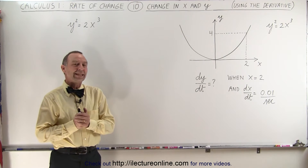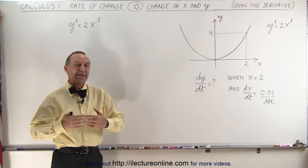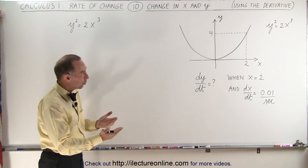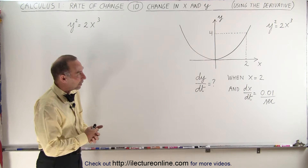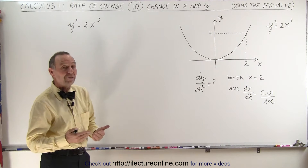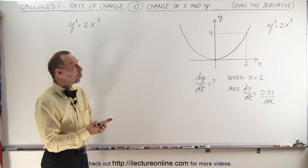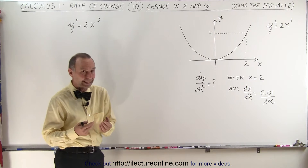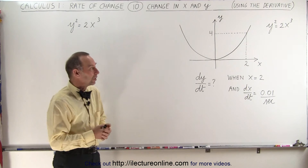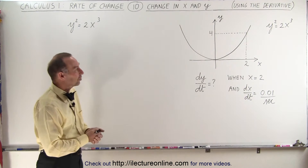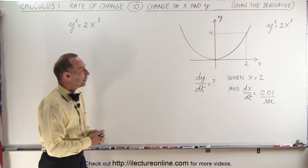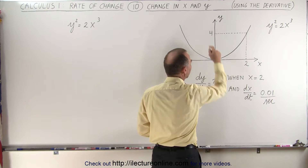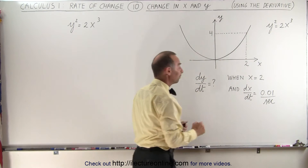Welcome to Electron Line. Here we have a simple graph — a relationship between x and y — and the graph is that y squared equals 2x cubed. So it's not quite like a typical parabola, but it kind of looks the same. Here we see that when x is equal to 2, y would be equal to 4.